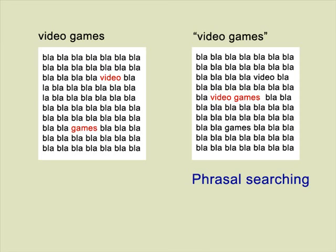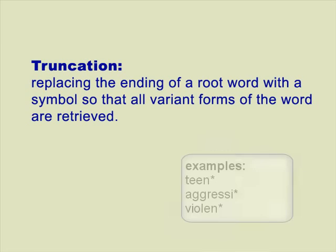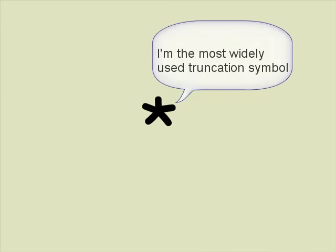Another useful technique is called truncation. Truncation is when you replace the ending of a root word with a symbol. This tells the search engine to retrieve documents containing all variant forms of that root word. Most often the symbol for truncation is an asterisk, but you can always check a database's help files under truncation to make sure you're using the correct symbol for that database.